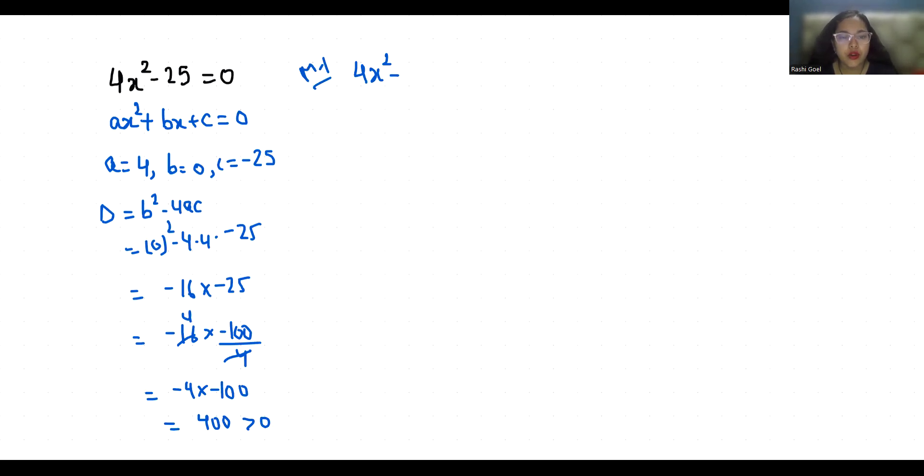I am going to use the quadratic formula: x = (-b ± √(b² - 4ac)) / 2a. So this is √400 / (2 × 4). 400 we can write as 20 × 20 by 8.